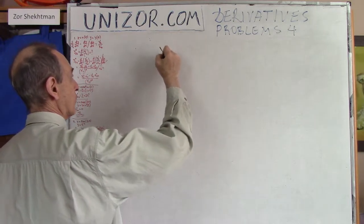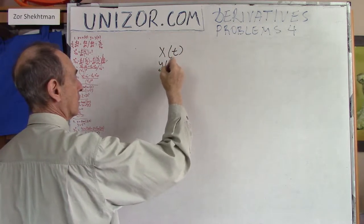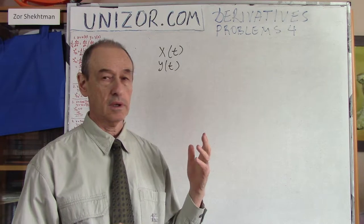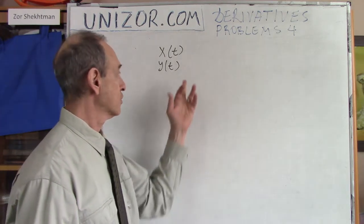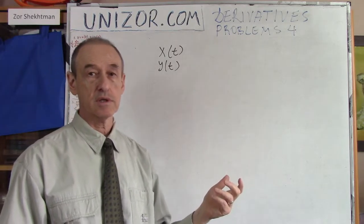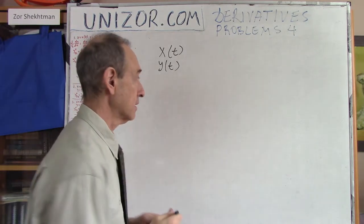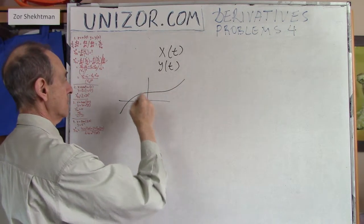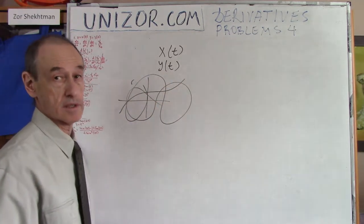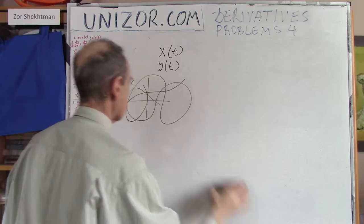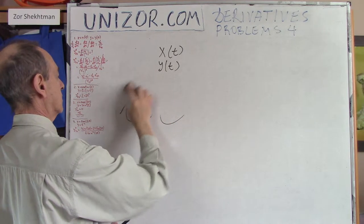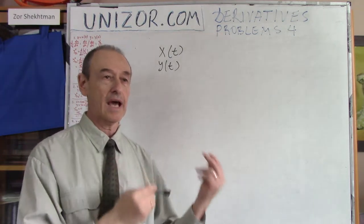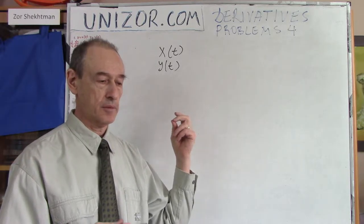First of all, let's assume that our function is defined parametrically. The typical example of this is where t is time and x and y are coordinates of a point moving on the plane, basically making some kind of a trajectory. What is the mechanical meaning of the first derivative?